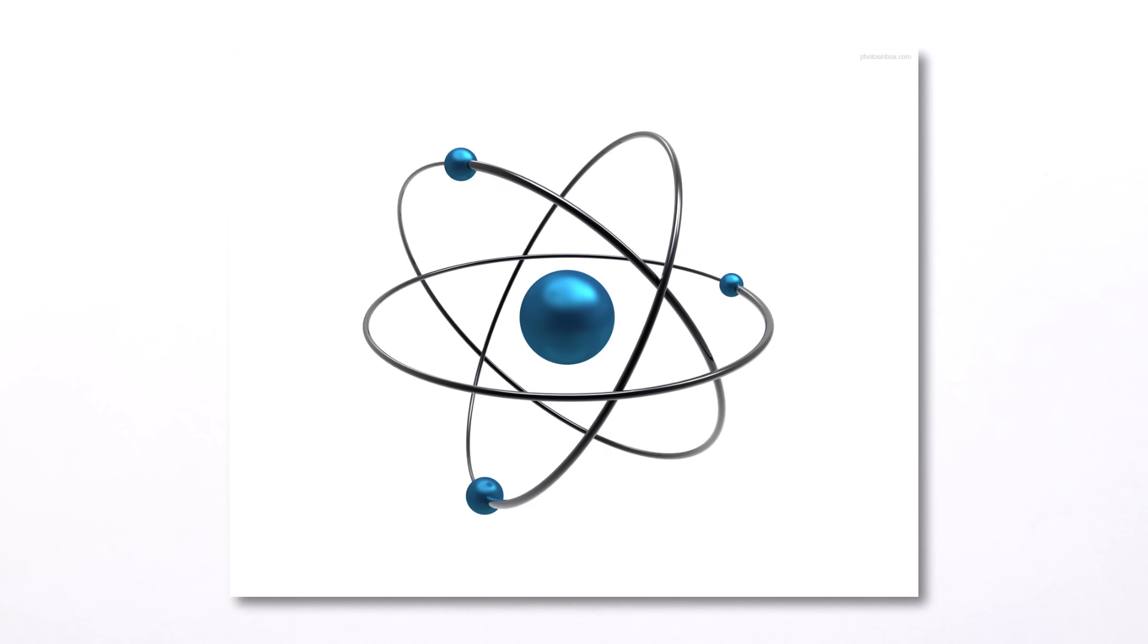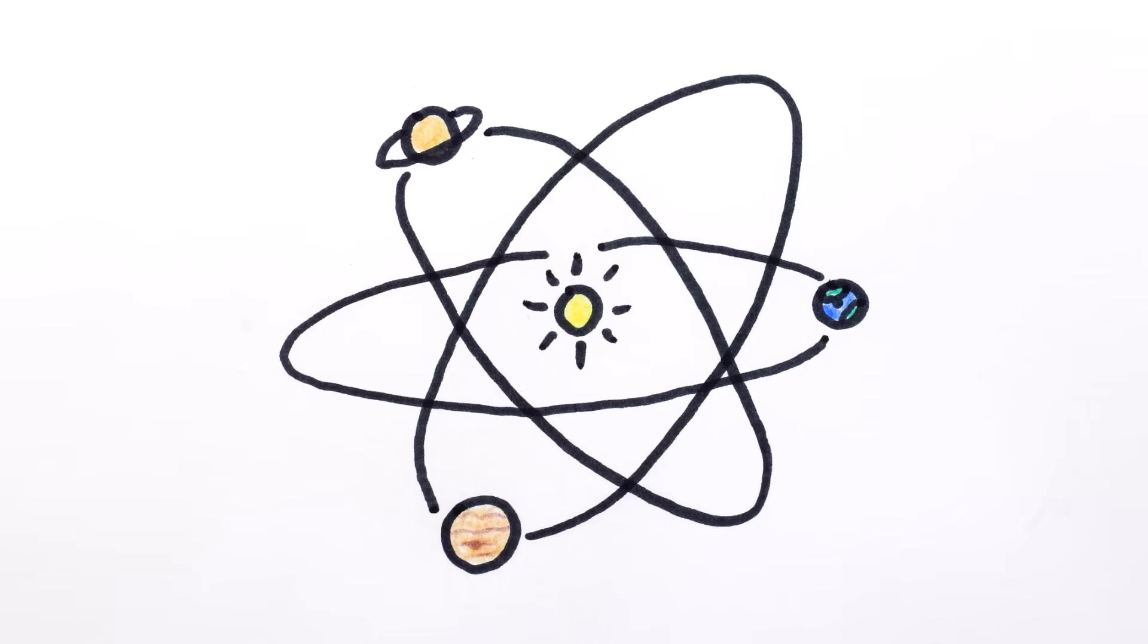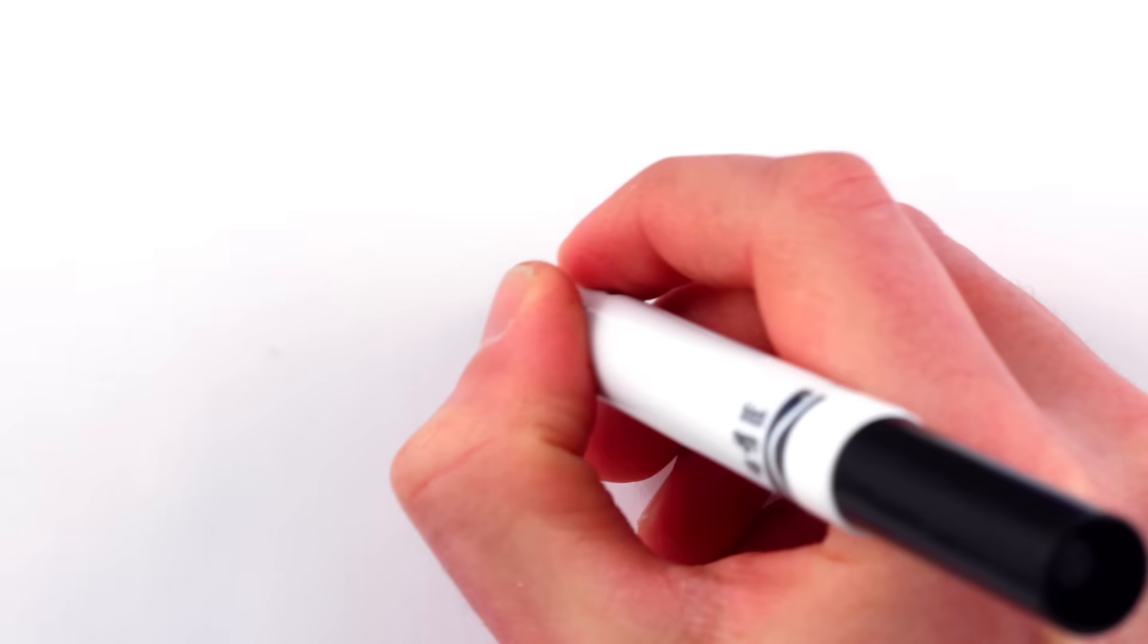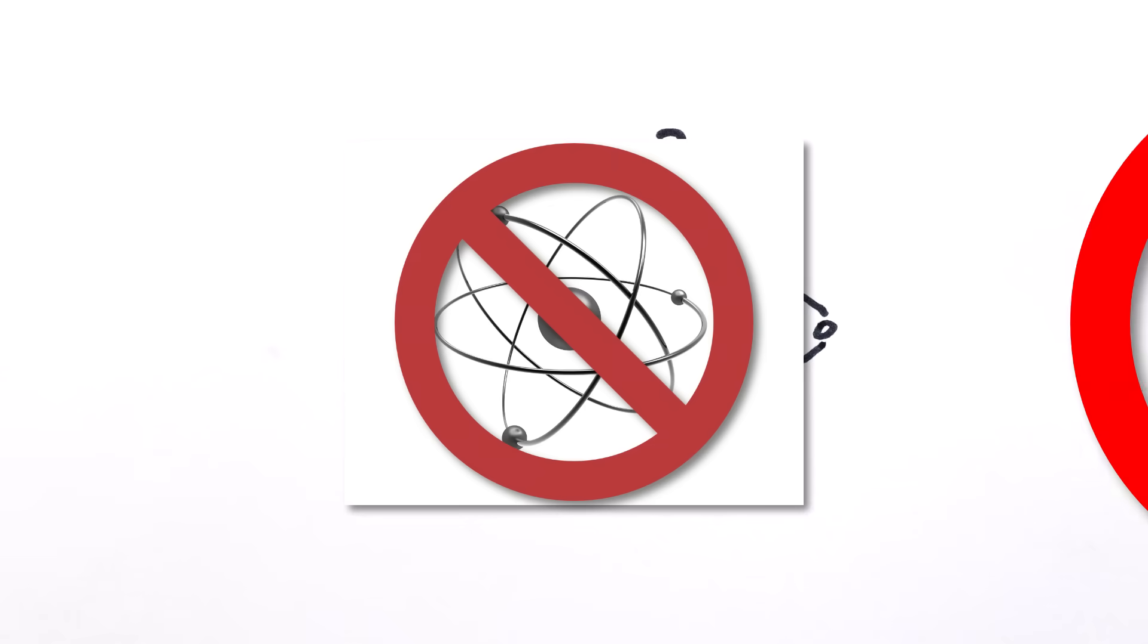I mean, we've all seen the planetary model of the atom, which is definitely wrong when applied to atoms, but it also kind of suggests that planets might revolve around the Sun every which way. So is our solar system somehow special in its flatness? Or is the planetary model of the atom doubly wrong?